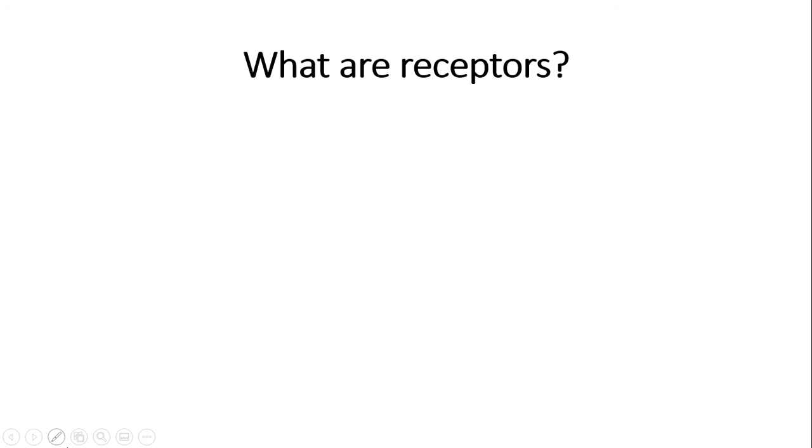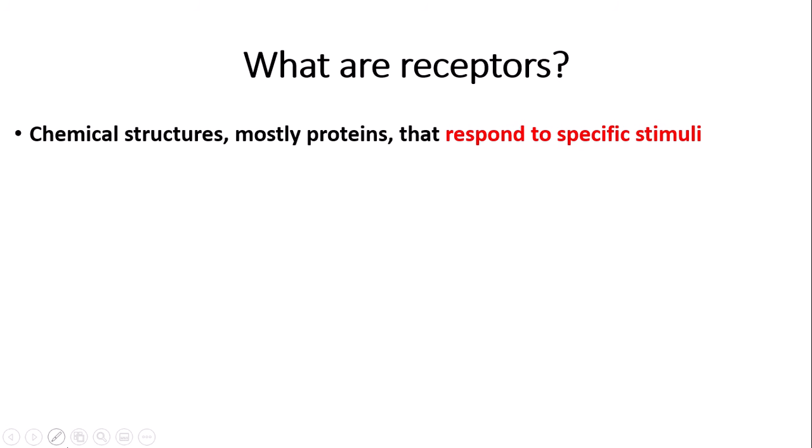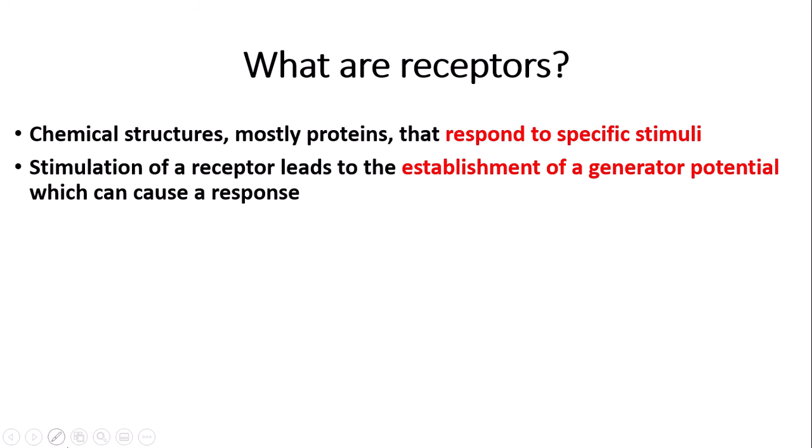So what are receptors? Receptors are chemical structures, mostly proteins, that respond to specific stimuli such as pressure, pH, light, etc. Stimulation of a receptor leads to the establishment of a generator potential, which can cause a response.